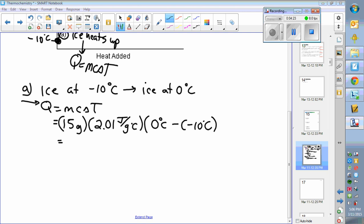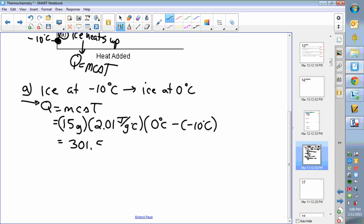We'll work that out, plug it into our calculator—we get 301.5 is what q is. If you notice, grams have cancelled, degrees celsius cancel, and we're left with joules behind. For step one, just heating the ice up requires 301.5 joules.